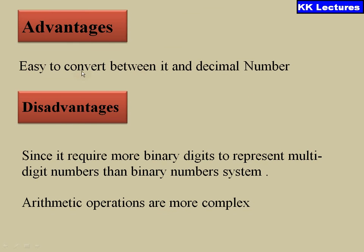The advantage of BCD is that it is easy to convert between BCD and decimal numbers. The disadvantage is that BCD requires more binary digits to represent multi-digit numbers than the pure binary number system. For example, the number 6 can be expressed in just 3 bits as 110 in binary, but in BCD it requires 4 digits. Additionally, arithmetic operations are more complex when using BCD numbers.